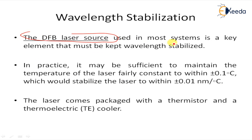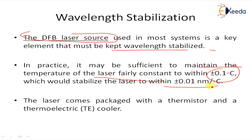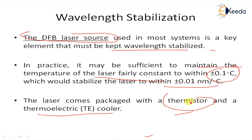The DFB laser source used in most systems is a key element that must be kept wavelength stabilized. In practice, it may be sufficient to maintain the temperature of the laser fairly constant within plus or minus 0.1 degree Celsius, which would stabilize the laser to within a range of plus or minus 0.01 nanometers. The laser comes packed with a thermistor and a thermoelectric cooler. The temperature can be sensed by monitoring the resistance of the thermistor and kept constant by adjusting the drive current in the TEC cooler.